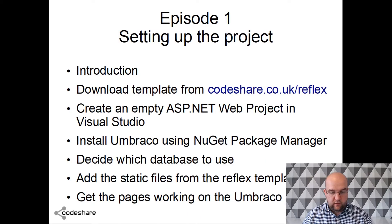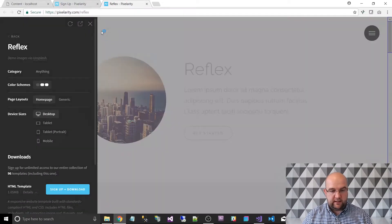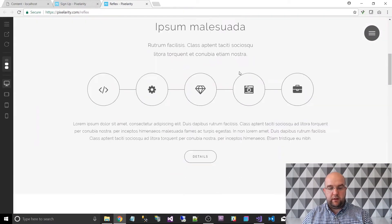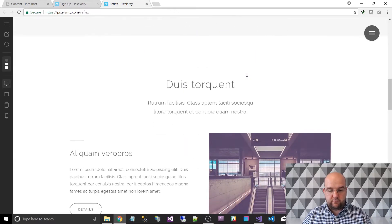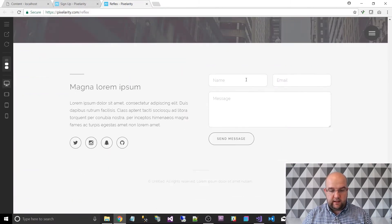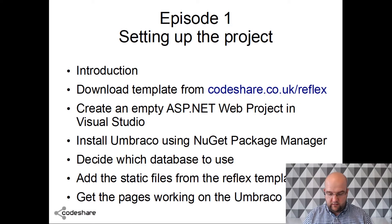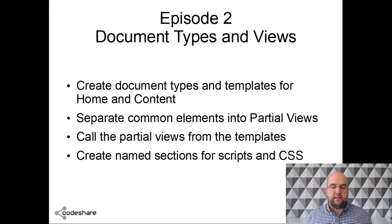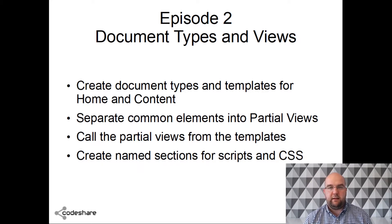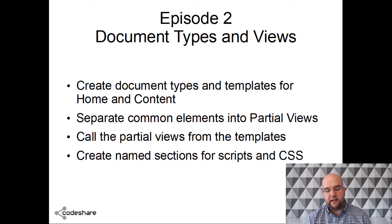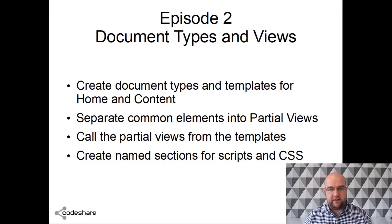So if we go here again, we can see this is the template we are building into Umbraco. In episode two, we need to create some document types and templates so that we can have a home template and a content template. We need to separate out any common elements into partial views, call those partial views from the templates, and then create named sections for scripts and CSS.